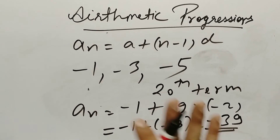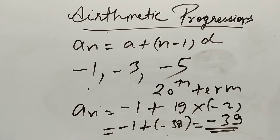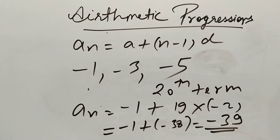I hope the first part of AP is clear. The formula is: aₙ equals a plus (n minus 1) into d, where a is the first term, n is the nth term position, and d is the common difference. AP is one of the easiest and most scoring chapters in class 10. In the next video we will solve NCERT questions on AP. Thank you, keep learning!